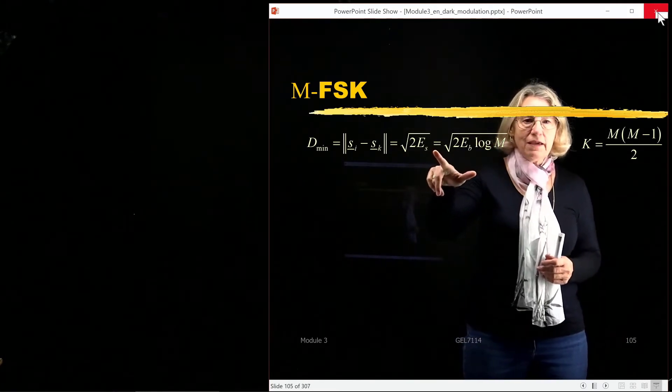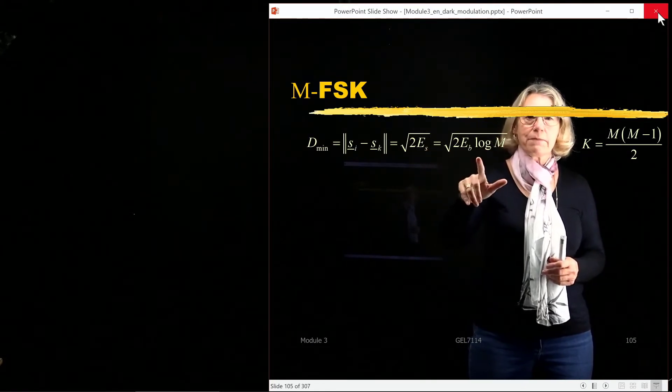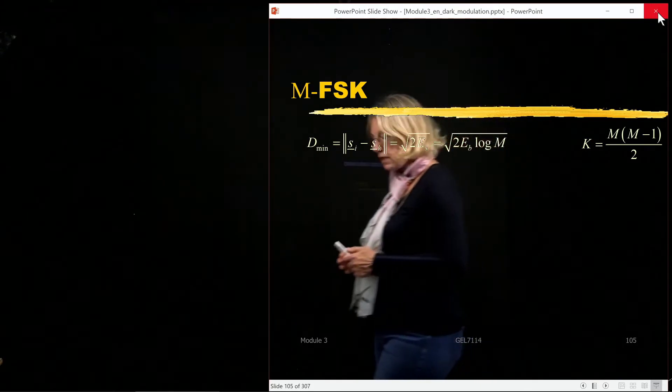Now, I can change this to Eb by using the simple relationship between the symbol energy and the bit energy, so it's the bit energy times log two m. So from this,